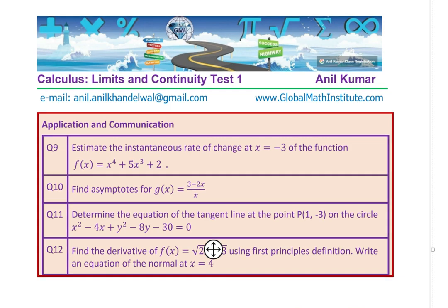Questions nine to twelve: Question nine — estimate the instantaneous rate of change at x equals minus three of the function f of x equals x to the power four plus 5x cubed plus 2. Question ten — find asymptotes for g of x equals (3 minus 2x) over x. Question eleven — determine the equation of the tangent line at the point (1, minus 3) on the given circle, where the equation is given in standard form. Question twelve — find the derivative of f of x equals the square root of (2x minus 3) using first principles definition, and write an equation of the normal at x equals 4.